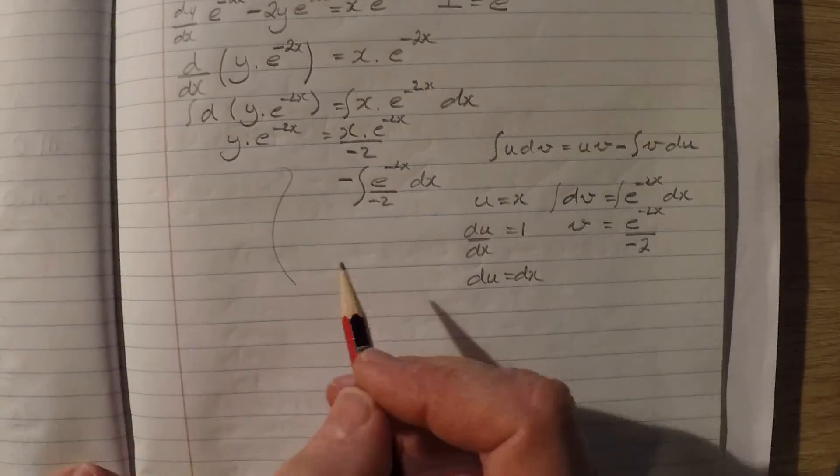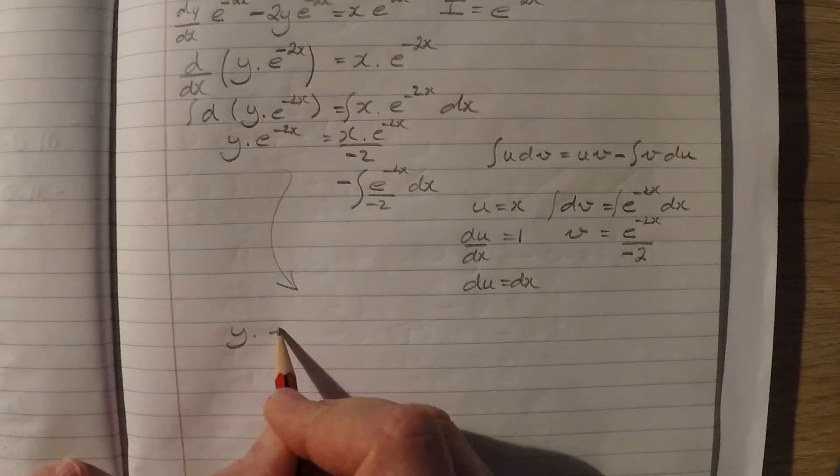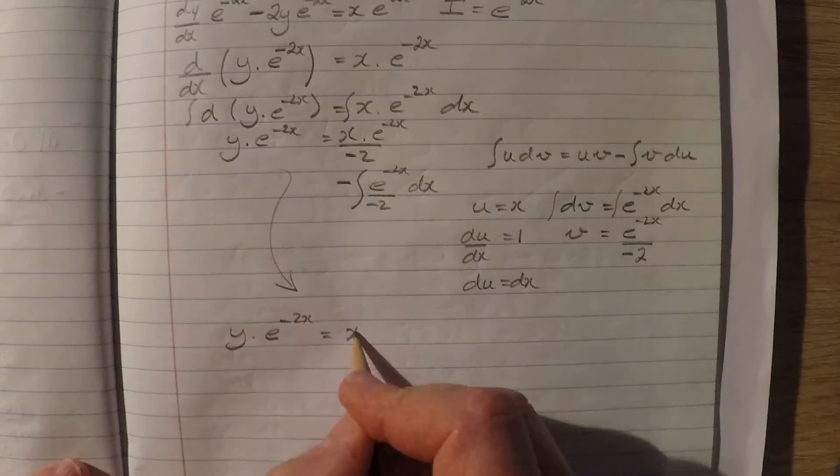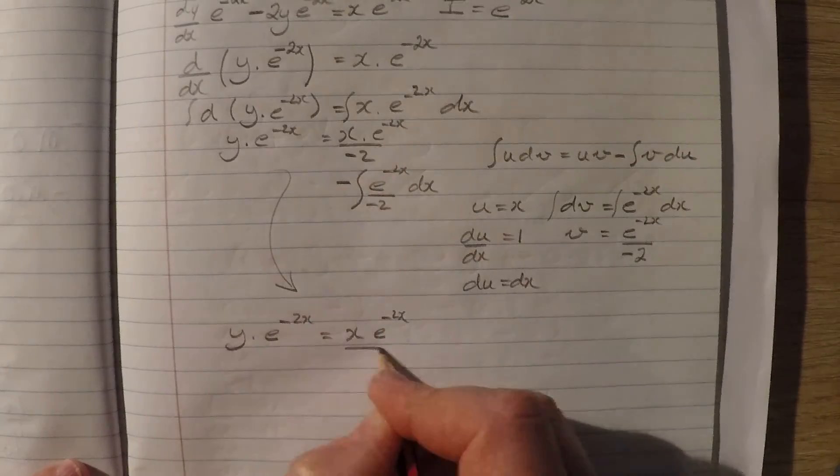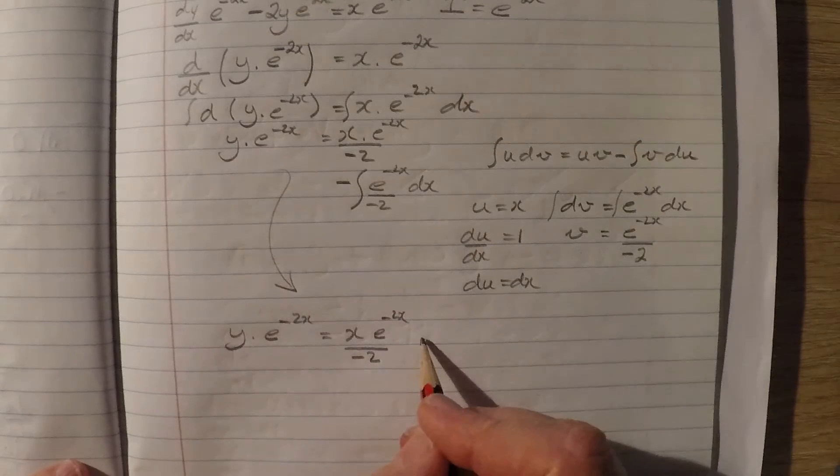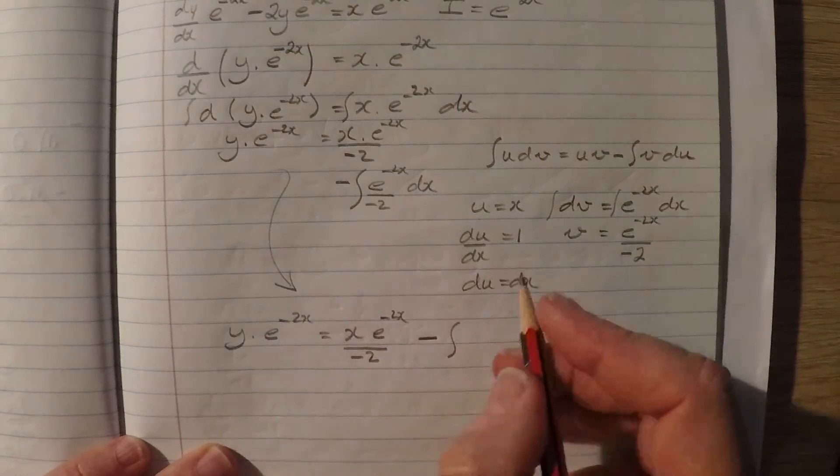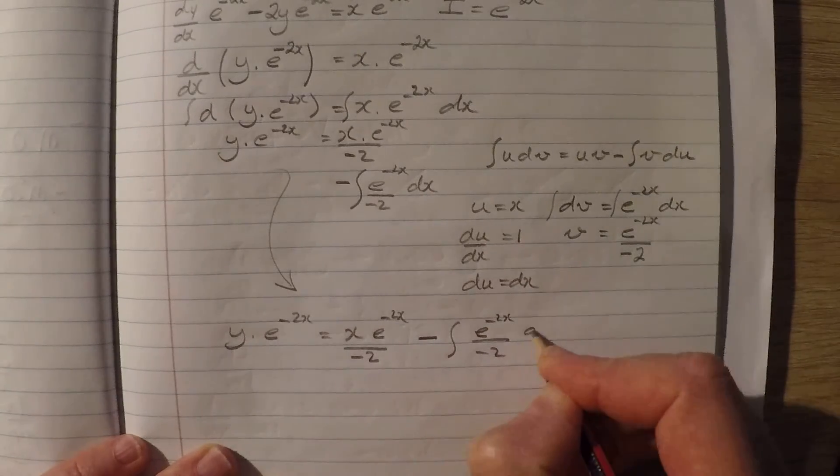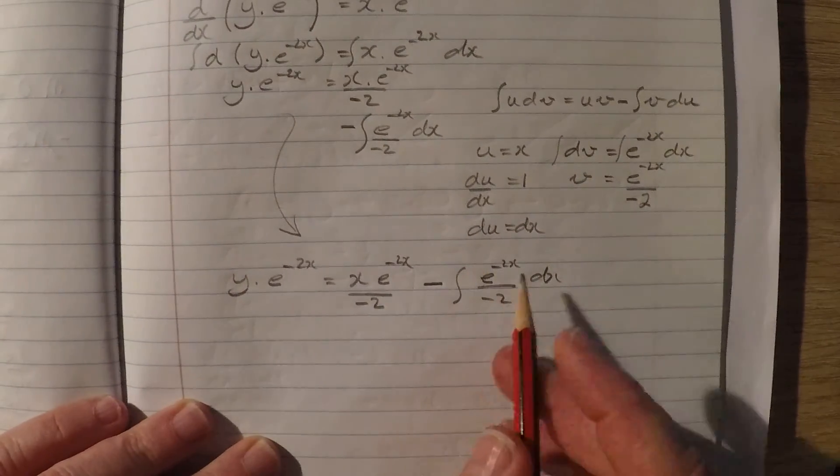Just going to skip down the page a bit to where there's some more room. So y times e to the negative 2x equals x e to the negative 2x over negative 2 minus e to the negative 2x over negative 2 dx. So we have a much easier integral here.